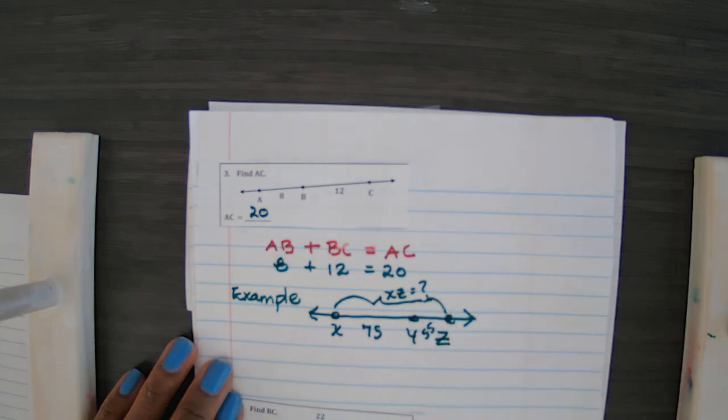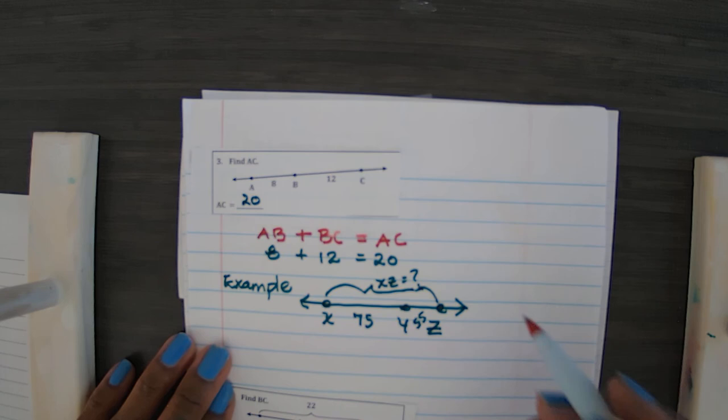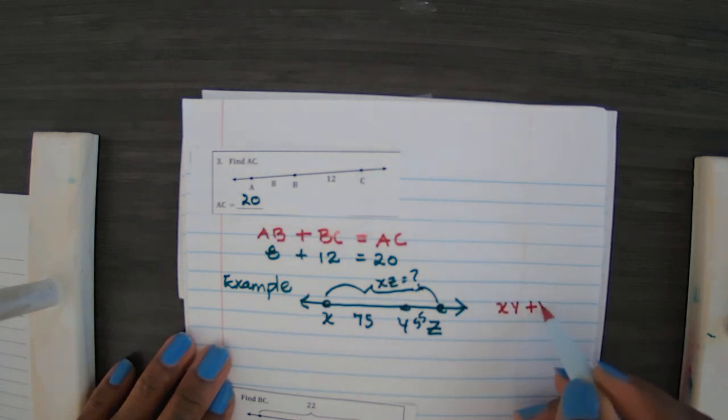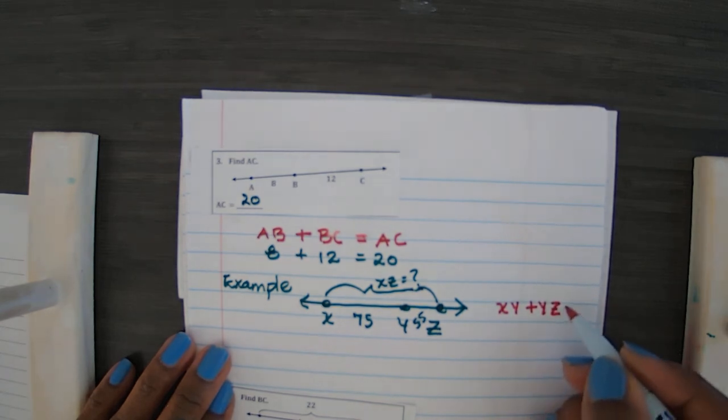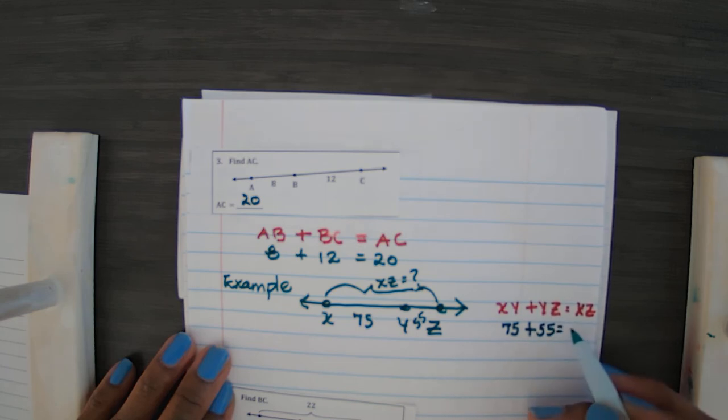Okay, the segment addition postulate says that XY plus YZ, when you have three collinear points, that is going to be equal to XZ. So when we substitute in we see that XY is 75 units, YZ is 55 units, so together, all together, that's 130 units.